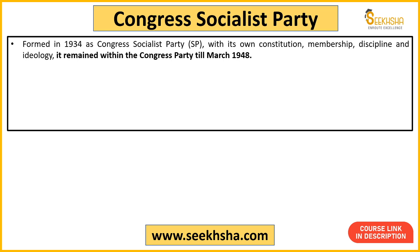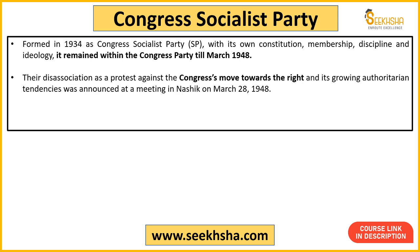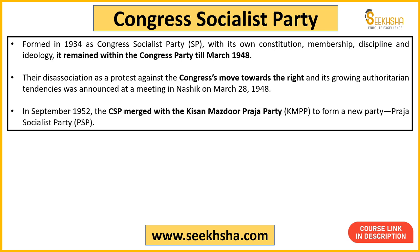The Congress Socialist Party was formed in 1934. It was essentially a grouping within Congress but had its own constitution, membership, discipline, and ideology, while still remaining associated with Congress. Eventually, as Congress moved toward more rightist ideology and authoritarianism was felt within the party, at a meeting in Nasik, the Congress Socialist Party decided to separate from Congress completely. In September 1952, it merged with the Kisan Mazdoor Praja Party to form the Praja Socialist Party (PSP).